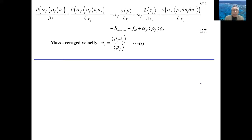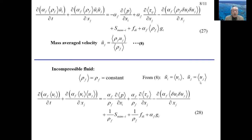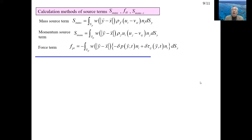Equation 27 from the last slide can be simplified depending on the given conditions. If the fluid is incompressible, the phase-average density becomes the normal density, and the mass-average velocities U_i wave and U_j wave defined in equation 8 become equal to the phase-average velocities U_i and U_j — that is, the mass-average velocity can be replaced with the phase-average velocity. From here, I will explain how to give the mass source term, momentum source term, and reaction force term in numerical calculations.